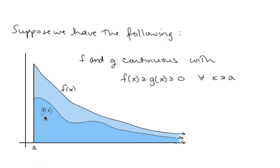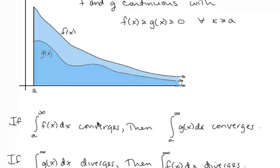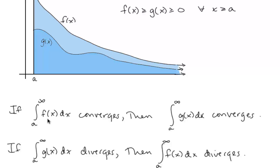Similarly, if we can show that the area under g is infinite, then certainly the area under f must also be infinite. So if the integral of g(x) from a to infinity diverges, then so will the integral of f(x) from a to infinity. That's what the Comparison Theorem tells us: if the integral of f converges, then the integral of g also converges; and if the integral of g diverges, then the integral of f also diverges.